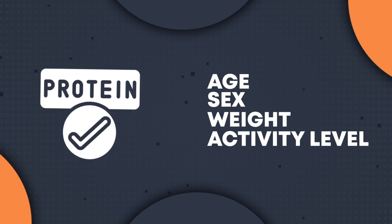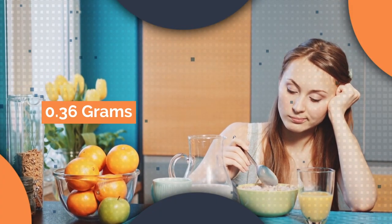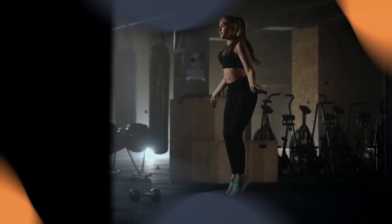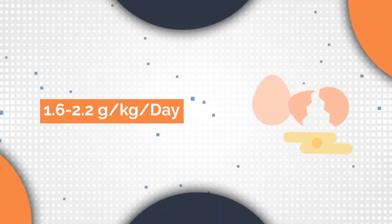A general guideline is 0.36 grams of protein per pound of body weight for most adults. For athletes and those looking to build muscle, the recommended intake is higher, about 1.6 to 2.2 grams per kilogram per day, or around 0.7 to 1.0 grams per pound per day.